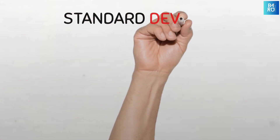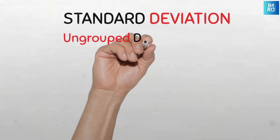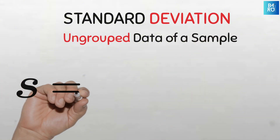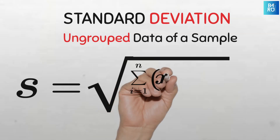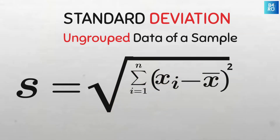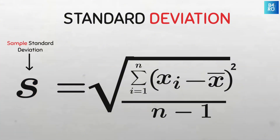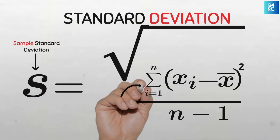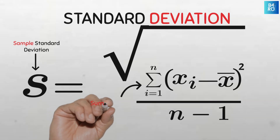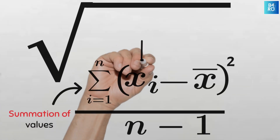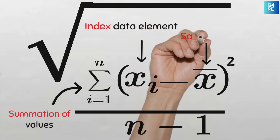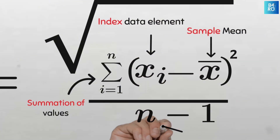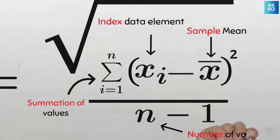The standard deviation for grouped data of a sample is given by the formula: s equals the square root of the summation of all the squared deviations of all values from the sample mean, all divided by n minus 1. Here, the Latin letter s represents the standard deviation of the sample. Upper case sigma from i equals 1 to n is the summation of the values from the first to the last. X subscript i is the value of the index data element in the sample. X bar is the sample mean of the data set, and lowercase n is the number of data elements.